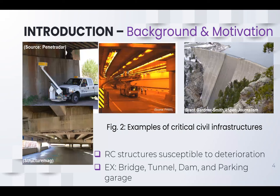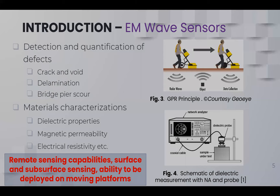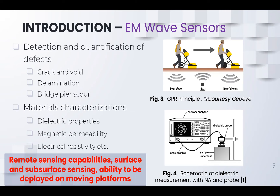When it comes to infrastructure inspection and monitoring, in the past civil engineers have relied on visual inspection. With advancing technology, a lot of non-destructive inspection techniques have been developed, but this talk will focus more on electromagnetic sensors — specifically synthetic aperture radar imaging — and also briefly discuss ground penetrating radar. These EM sensors are preferred because they have remote capability, meaning they can be deployed in areas where accessibility is an issue, and can also be mounted on moving platforms such as vehicles or drones.